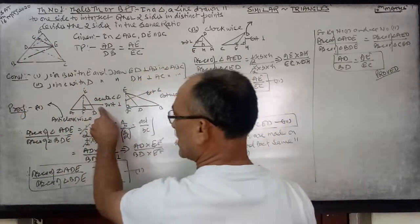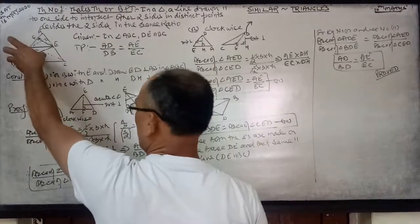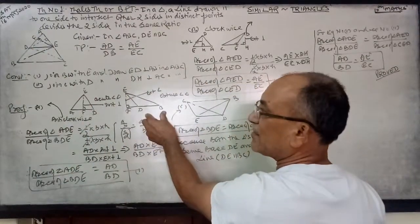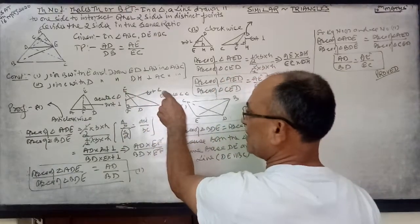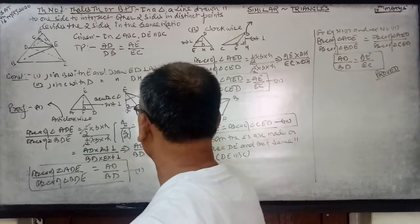And now this EF is working as an internal perpendicular. When BD is coming down as a base, EF is working as an external perpendicular. This is the external perpendicular.